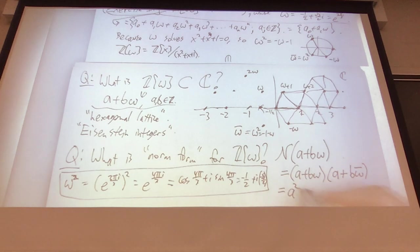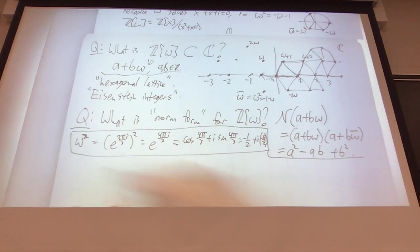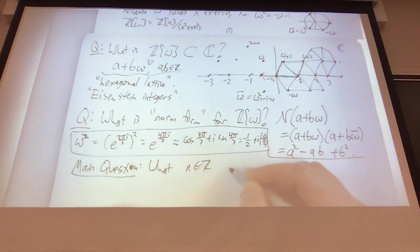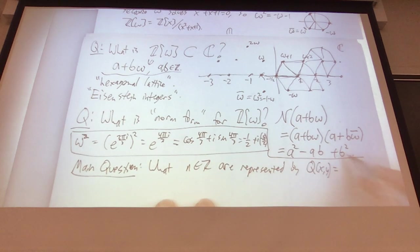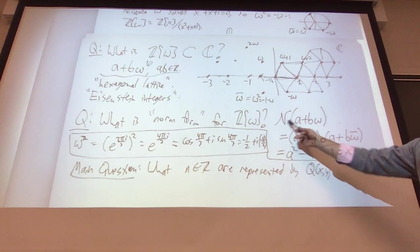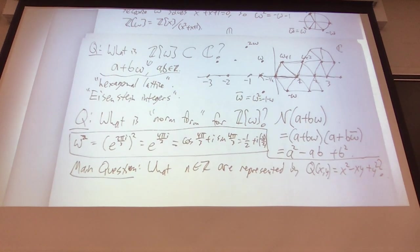The answer: a squared plus b squared minus ab. So the main question is: what integers are represented by the quadratic form x squared minus xy plus y squared? This is equivalent to asking which integers are norms of Eisenstein integers — the same kind of question as we asked for x squared plus y squared with the Gaussian integers.